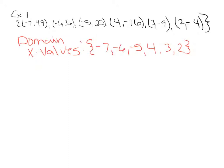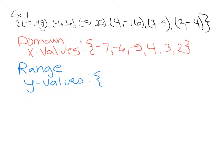The range is the set of y values. We can identify these as the y coordinates for this set of ordered pairs. So the range will be the set of 49, 36, 25, negative 16, negative 9, and negative 4.